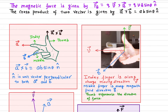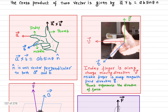Similarly, if I'm trying to find out the magnetic force F = Q(V × B), then my index finger will be in the direction of the velocity. This is my index finger pointing towards the velocity. My middle finger gives you the direction of the magnetic field. And in that case, my thumb points out in the direction of the force. This is called the right-hand rule.